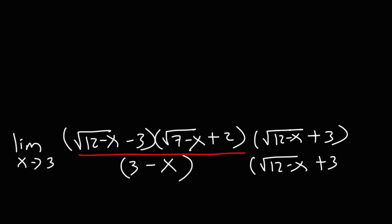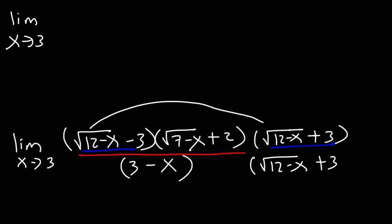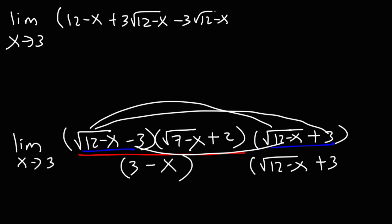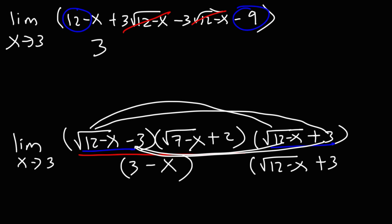Now we're going to FOIL those two factors. So we have the limit as x approaches 3. The square root of 12 minus x times itself will simply be 12 minus x. Then we get plus 3 times the square root of 12 minus x, minus 3 times the square root of 12 minus x — these two terms cancel. And negative 3 times 3 is negative 9, so 12 minus 9 gives us 3, and that whole expression becomes 3 minus x.